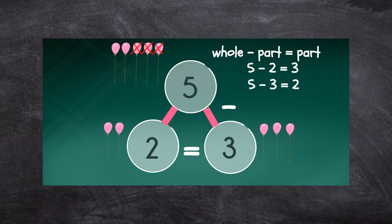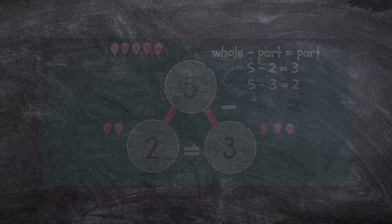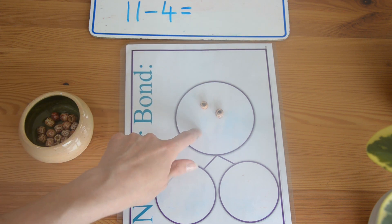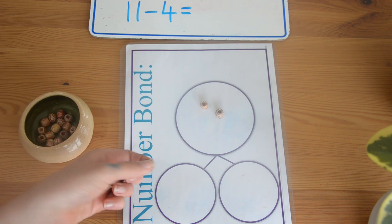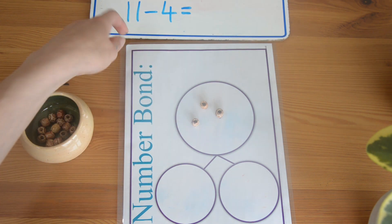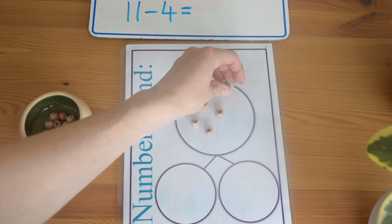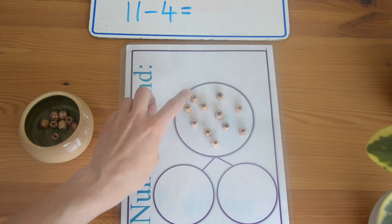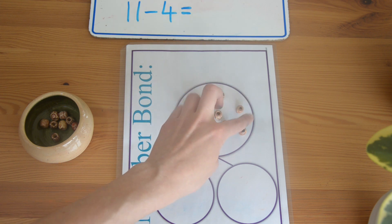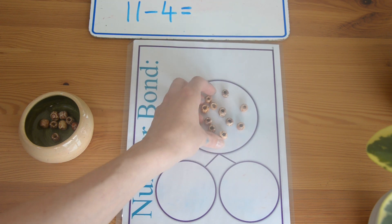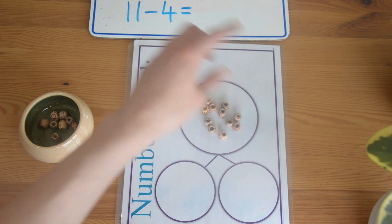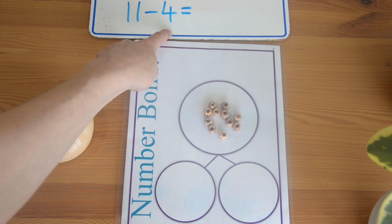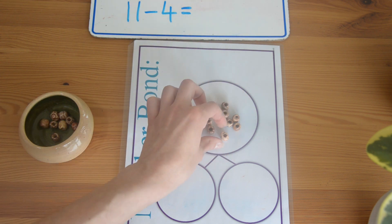I'm going to show you how to do subtraction using a part-part-whole model. With subtraction, I like to put the whole number in first — the whole number goes in the top circle. How many do we need for the whole number? Eleven. Let's count: 1, 2, 3, 4, 5, 6, 7, 8, 9, 10, 11. So we have 11 in our whole. We also know one of the parts, and one of the parts is four.